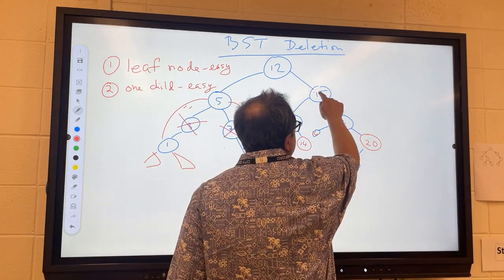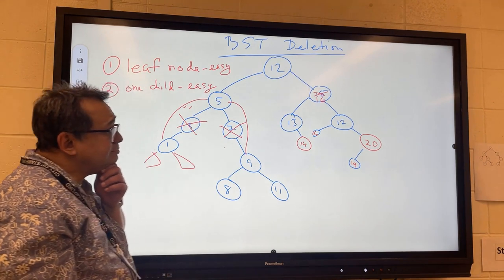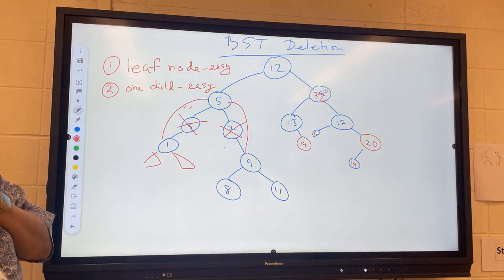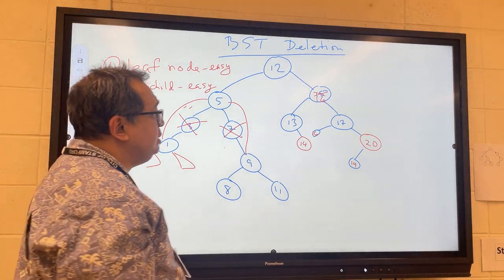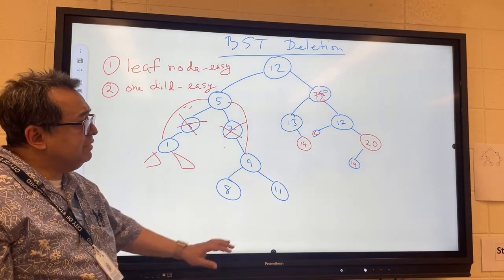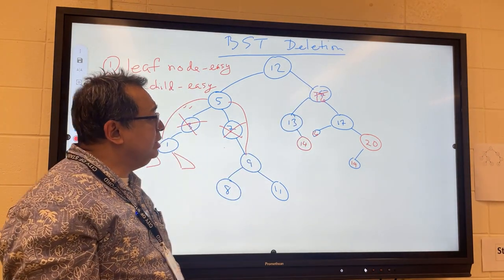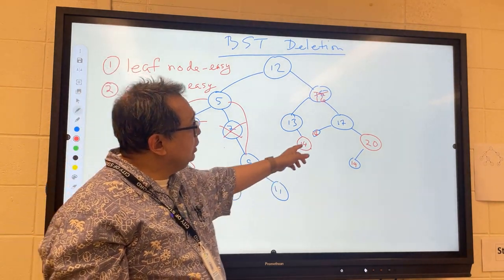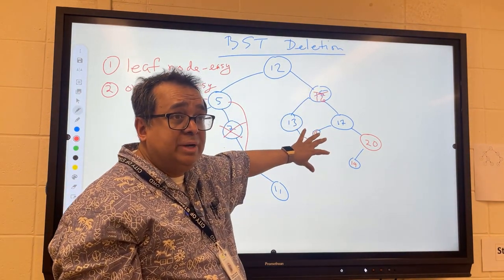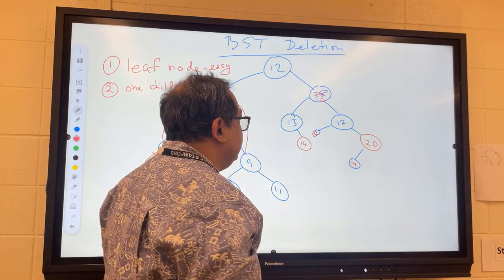You see that right - minimum node in the right subtree. And what we're going to do is we're going to copy that number into here. And then what we're going to do is we obviously have to get rid of this. We now have two 16s, that's no good, right? We have to get rid of this one. So in this case you can see I think we can just get rid of it. Once we get rid of it you can see that all the tree properties are still preserved.